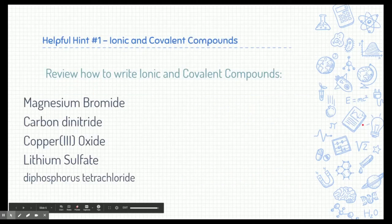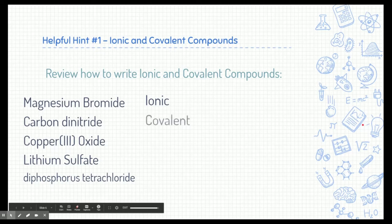Before we start writing our own chemical reaction equations, I have a few hints. The first hint deals with ionic and covalent compounds. Be sure you review how to write ionic and covalent compounds because knowing how to write them correctly is essential. Let's take a few practice chances right now. Magnesium bromide is an ionic compound because it's made of a metal and a non-metal. Carbon dinitride is a covalent compound because carbon and nitrogen are both non-metals. Ionic compounds have a metal and non-metals; covalent compounds only have non-metals.